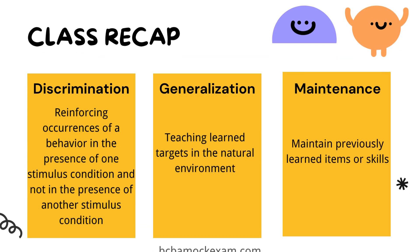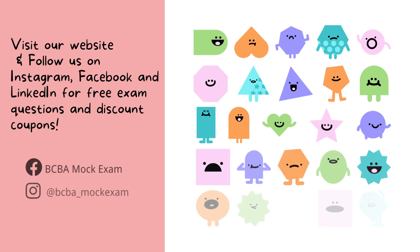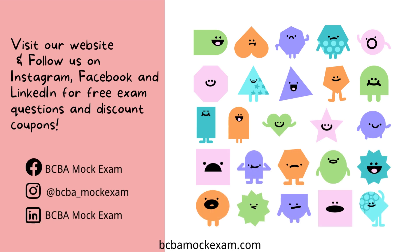To sum up, discrimination is reinforcing occurrences of behavior in the presence of one stimulus condition and not in the presence of another stimulus condition. Generalization is teaching learned targets in the natural environment, and maintenance refers to maintaining previously learned items or skills. That's all for today's video. See you next time. Visit our website for a study guide and exam practice, and follow us on Instagram, Facebook, and LinkedIn for free exam questions and discount coupons.